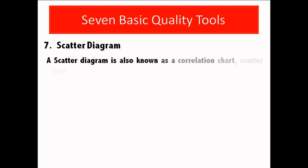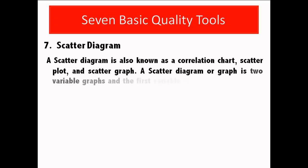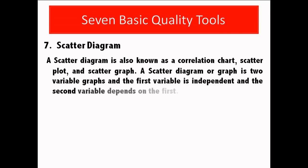Let's move to our final quality tool, scatter diagram. A scatter diagram is also known as a correlation chart, scatter plot, and scatter graph. A scatter diagram or graph is two variable graphs, and the first variable is independent, and the second variable depends on the first.